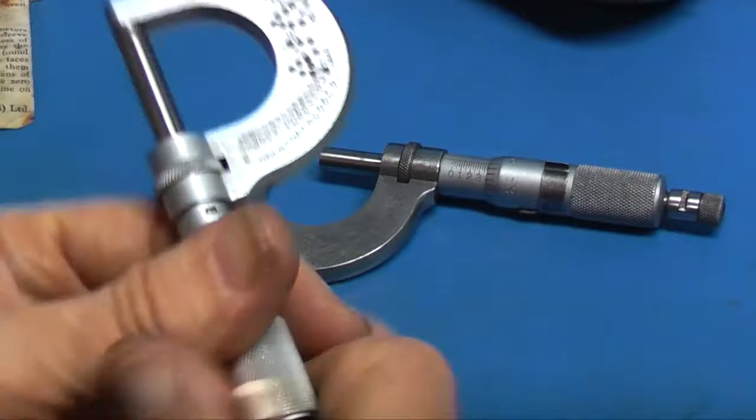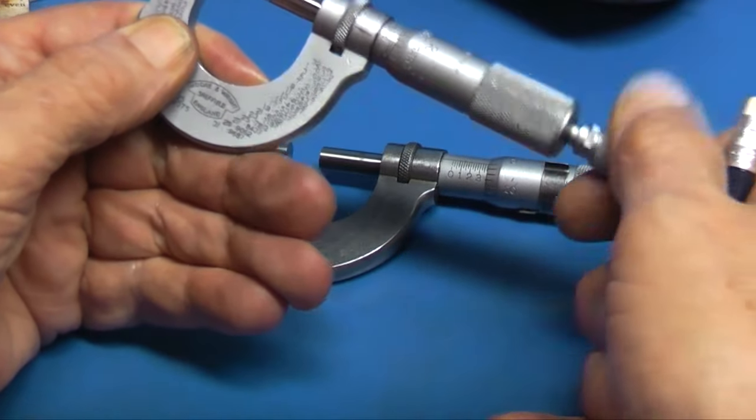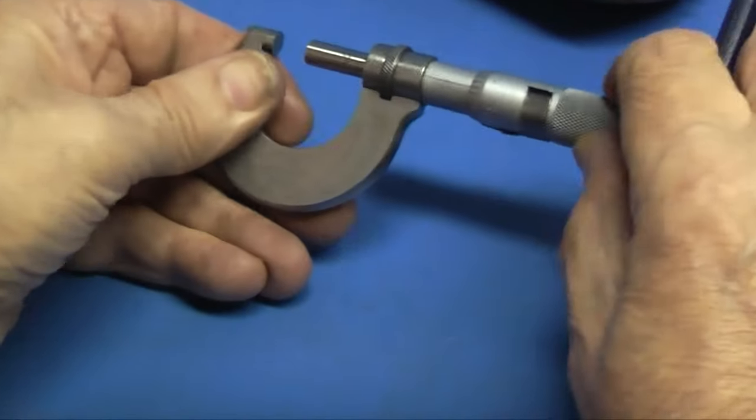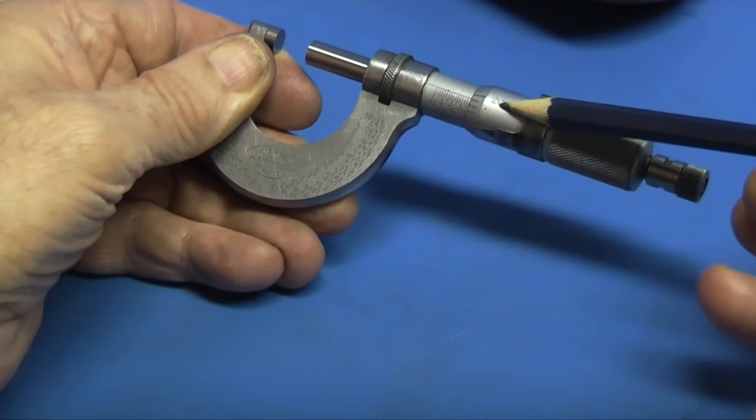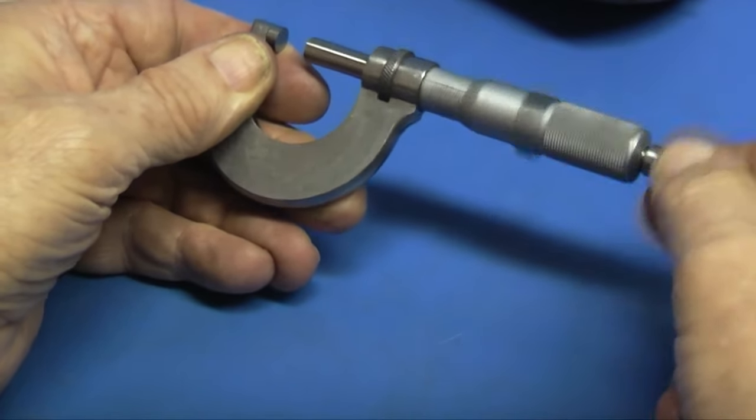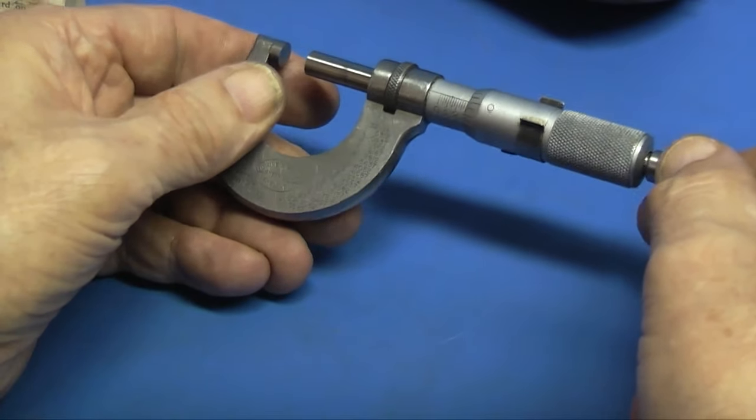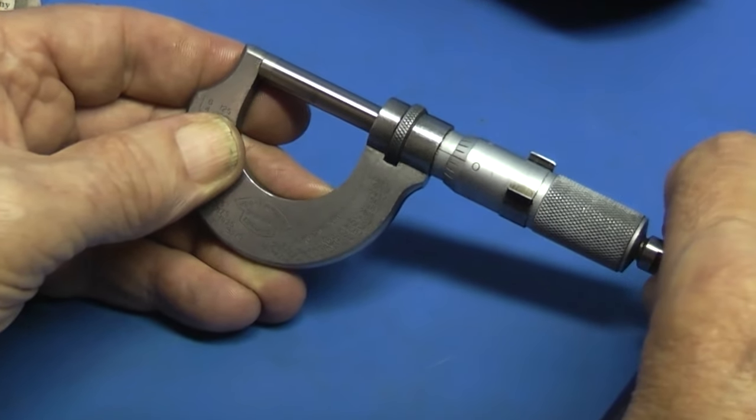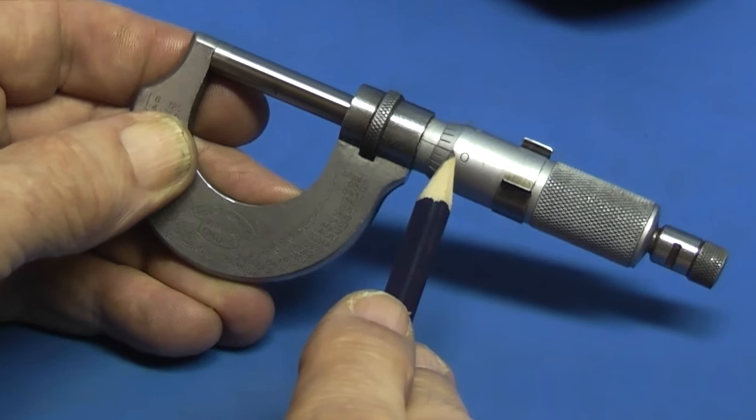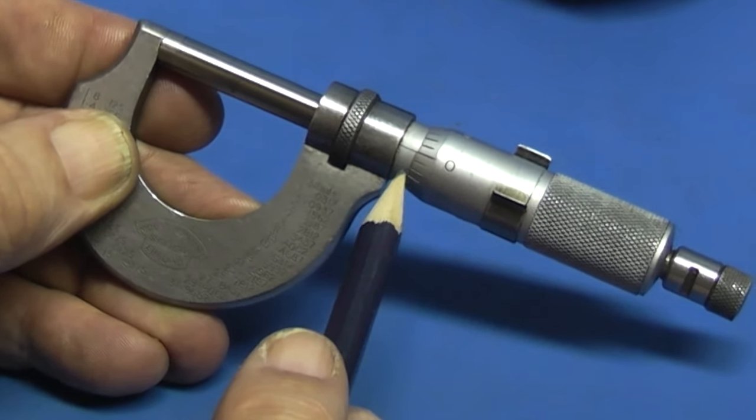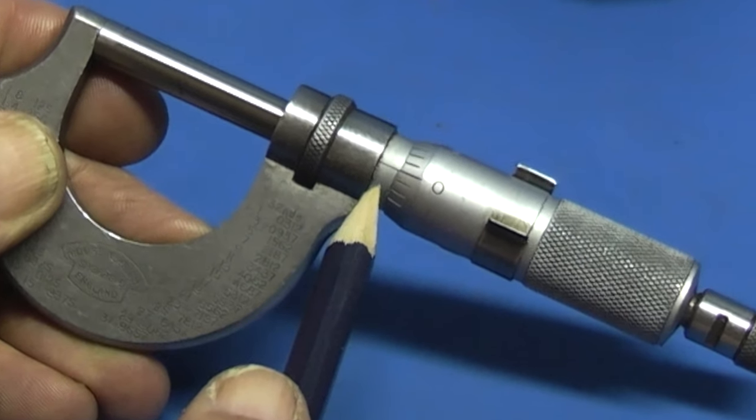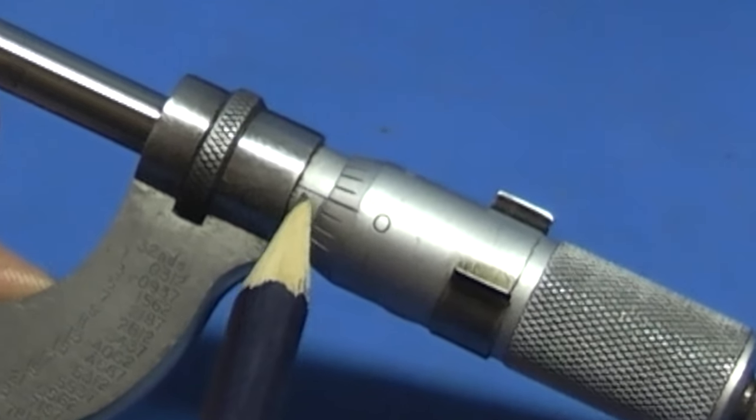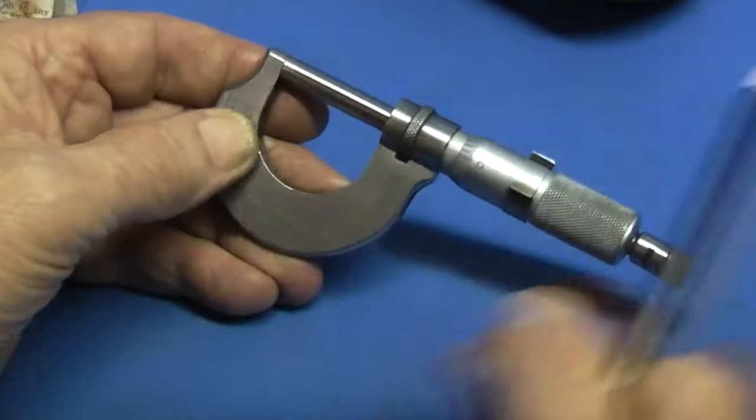So once you've set the nut on here inside and you're happy with the movement, you can clean the faces, bring the anvils together, and the zero should line up with the datum line exactly. Now if that's lined out, you can adjust it with the spanner so it gets the datum line exactly next to the zero. That's how you adjust the micrometer.